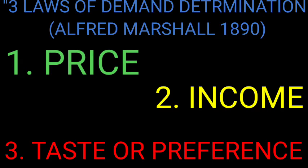Number two is income. People with very low income are not going to consume many things. For example, a family of four where the father makes only five to six thousand a month is not going to have any luxury to buy many things, and the demand for a number of goods will be very low because they are not affordable.